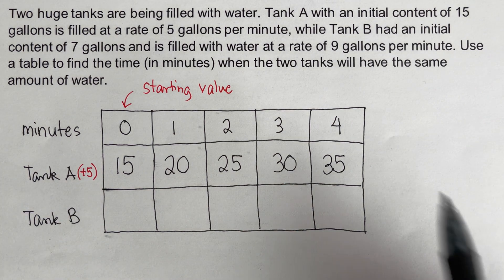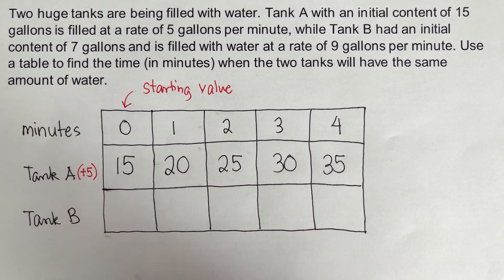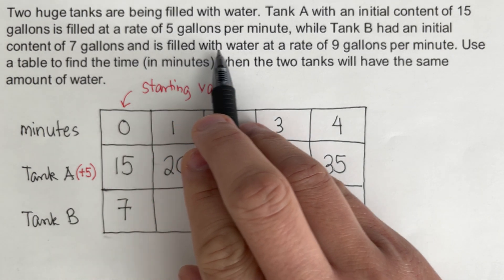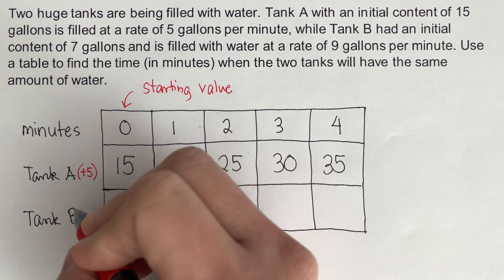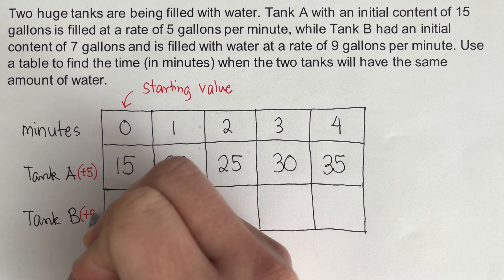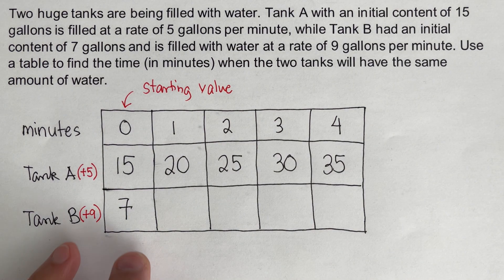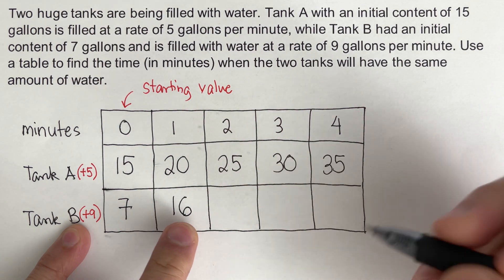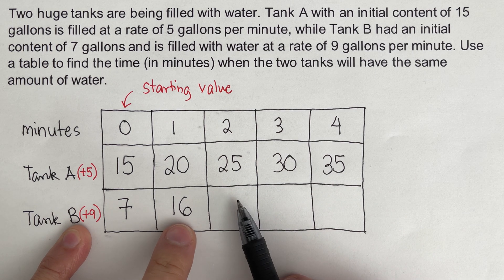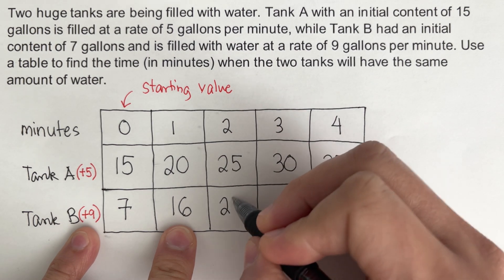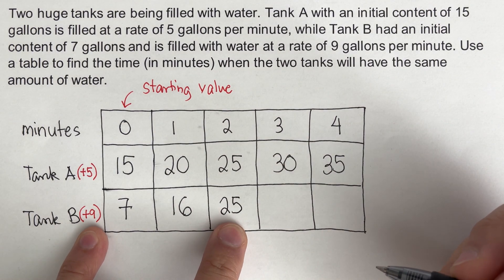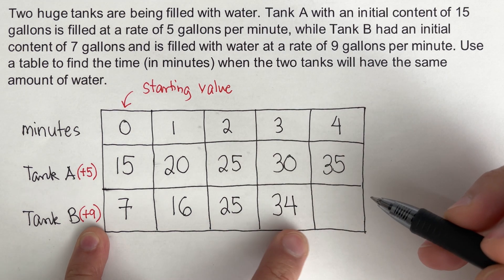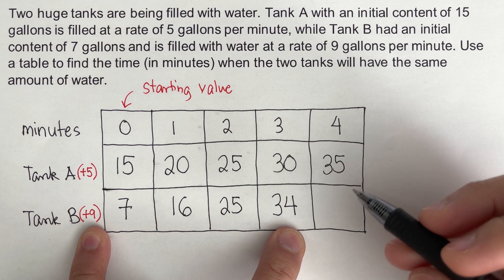Now for Tank B: it had an initial content of 7 gallons, so I'll write 7 at the starting value. It is filled at a rate of 9 gallons per minute, so we add 9 gallons every minute. From 7, on the first minute: 7 plus 9 is 16. On the second minute: 16 plus 9 is 25. On the third minute: 25 plus 9 is 34. On the fourth minute: 34 plus 9 is 43.